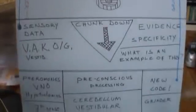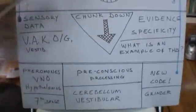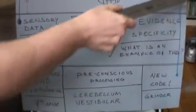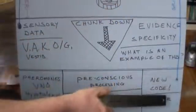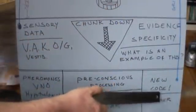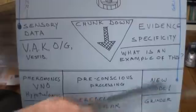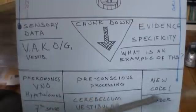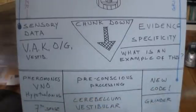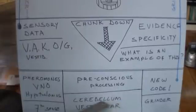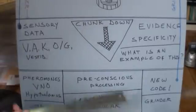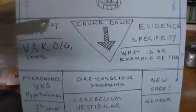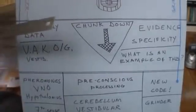John Grinder, over here, is connecting — in his new code ideas — very much the area of pre-conscious processing, probably an area that has a lot to do with a region of the brain called the cerebellum, connecting that up with the ego state.